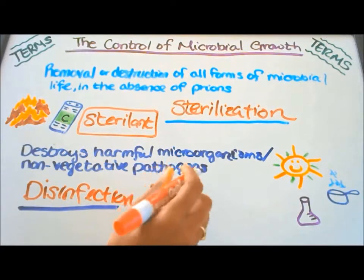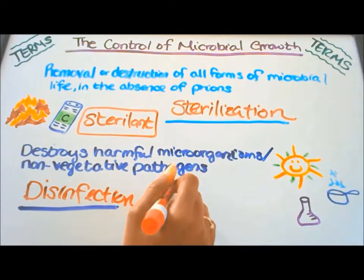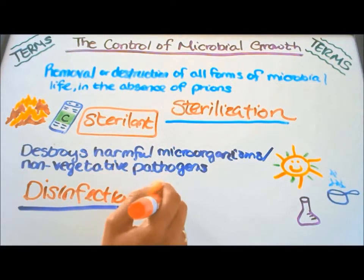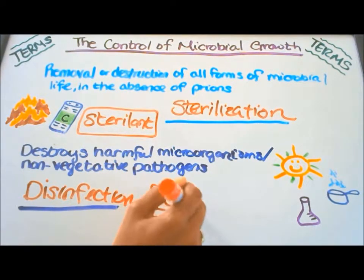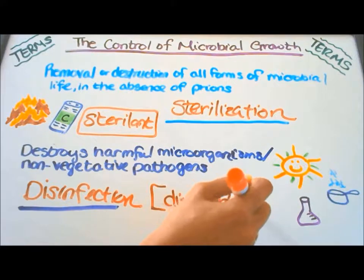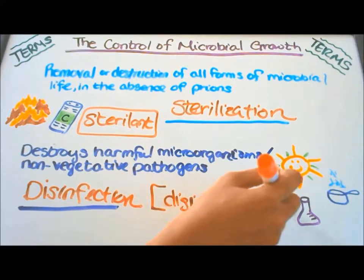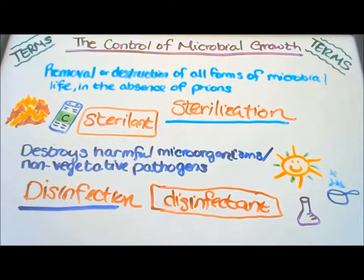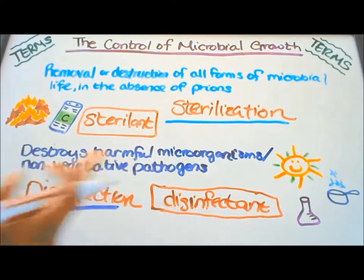The disinfectant is the agent used. Chemicals, UV radiation, boiling water, or steam can be used to disinfect an area and destroy harmful microorganisms or non-vegetative pathogens.